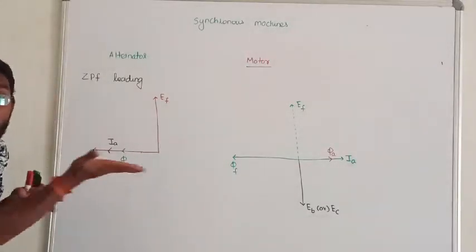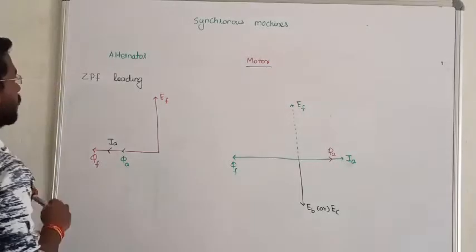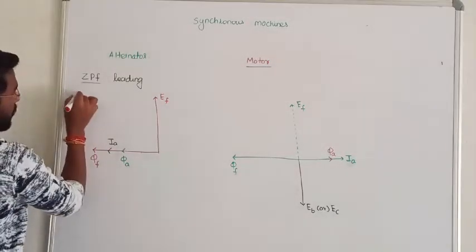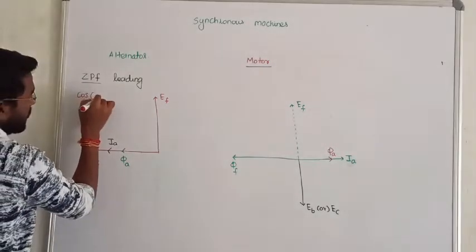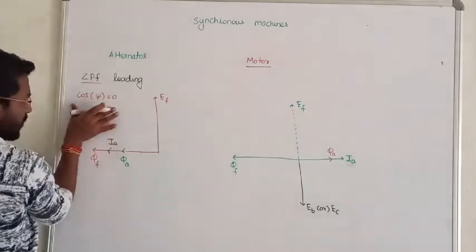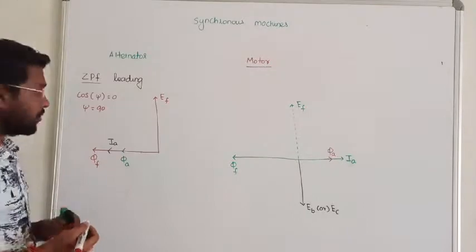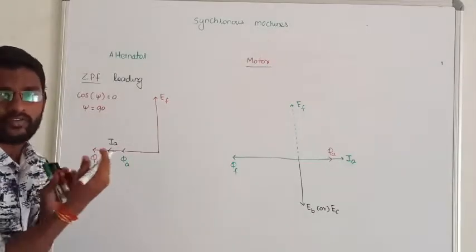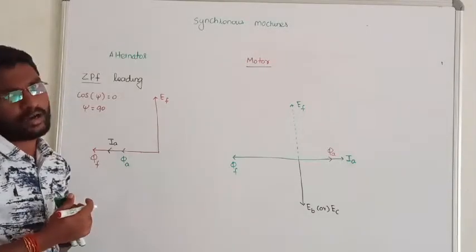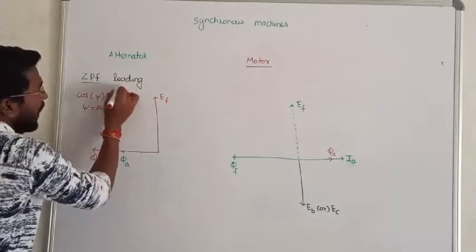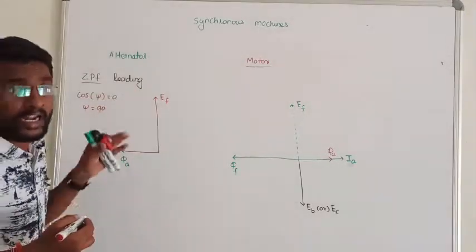Next we will see the zero power factor leading. So leading, I know first of all zero power factor. We know that is cos θ equal to zero, that is the phase difference in the induced voltage and the armature current.